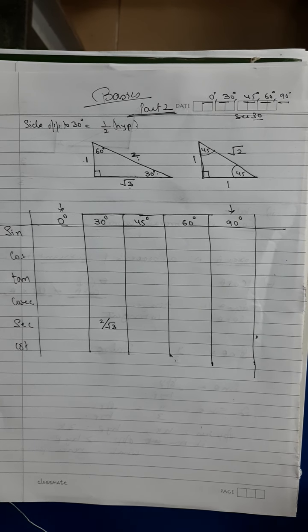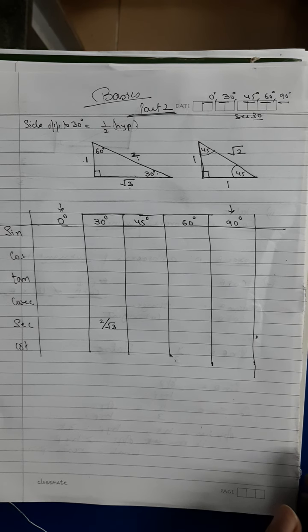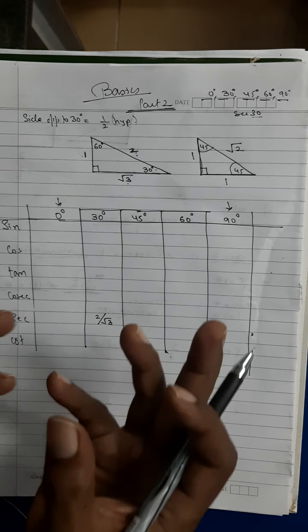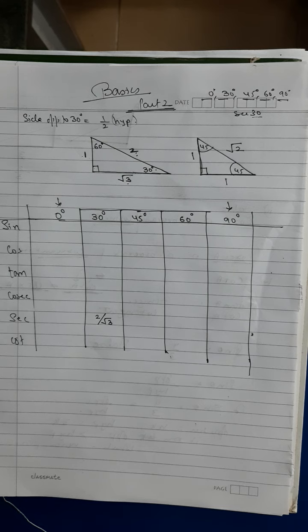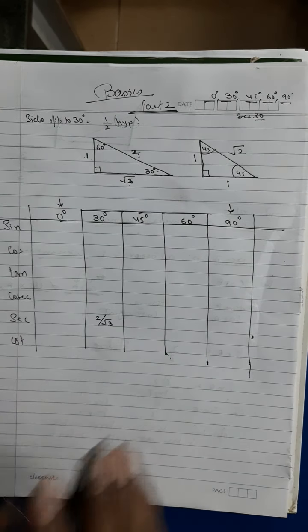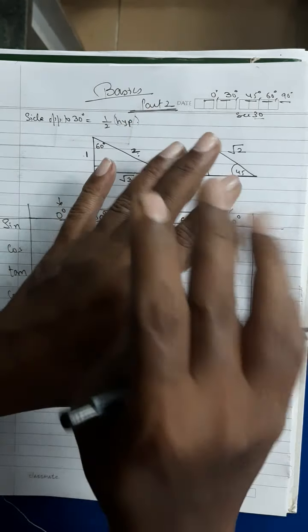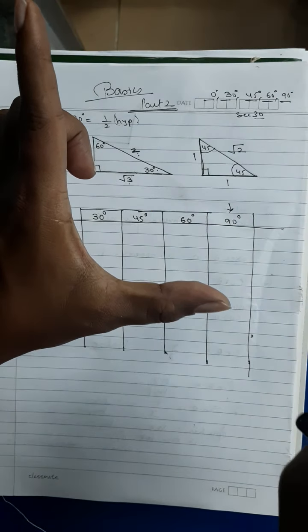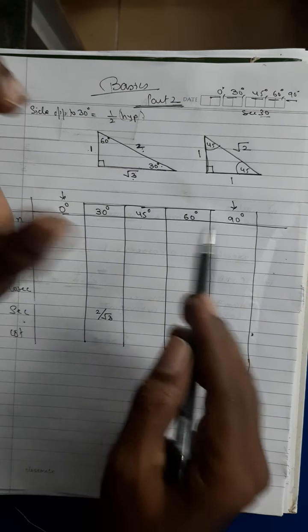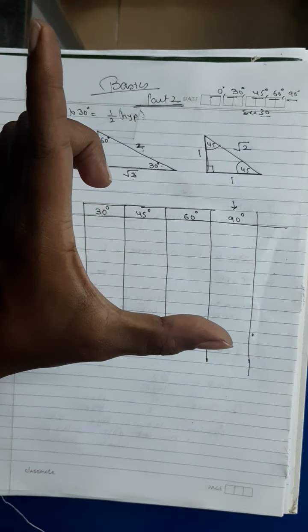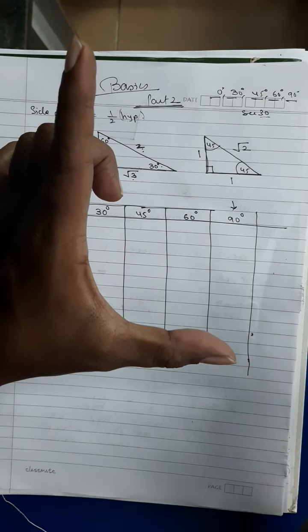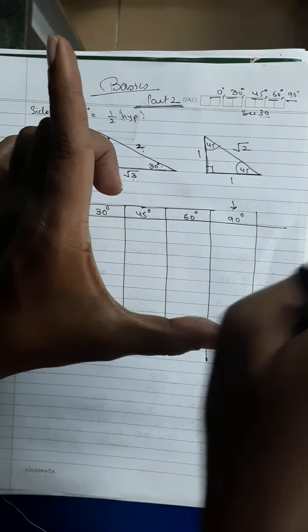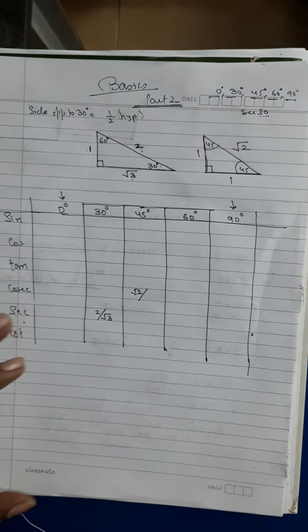I'm going in zigzag purposely because when solving questions, trigonometric ratios appear in any order. Now cosec 45: go to the 45-45-90 triangle where both legs are 1 and the hypotenuse is √2. Cosec is hypotenuse upon opposite side, so cosec 45 = √2/1 = √2.